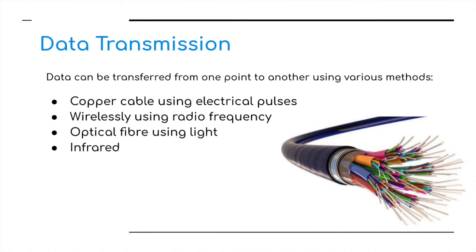When transmitting data between devices, we can do it in several different ways. Data can be transferred from one point to another using various methods such as copper cable using electrical pulses, wireless using radio frequency including Bluetooth, optical fiber using light, and finally infrared.